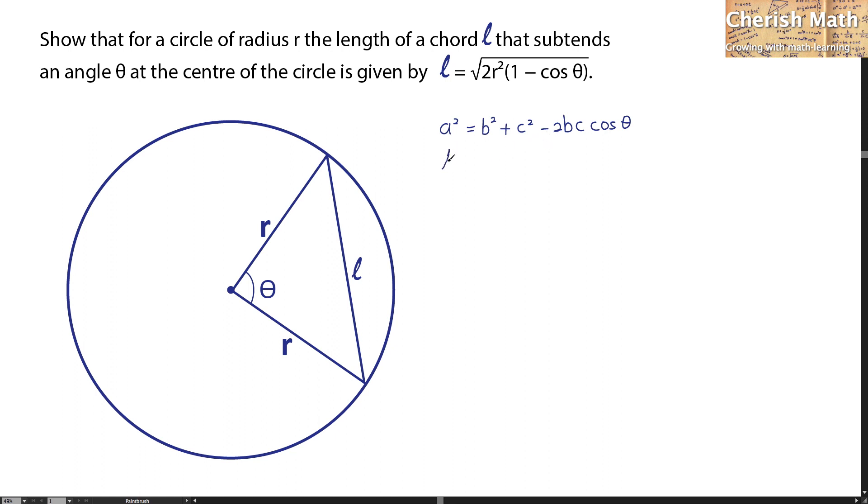That's how it goes: l² = r² + r² - 2r·r·cos θ. Now we simplify this equation: l² = 2r² - 2r² cos θ.